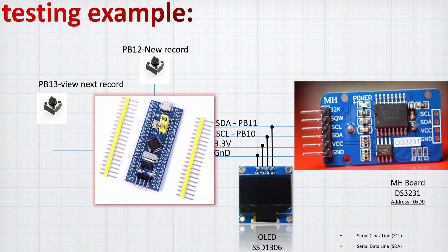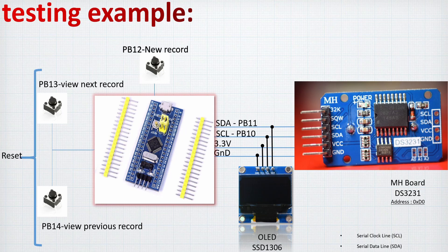I'm adding two other buttons. PB13 is to view the next record, as we will have a small navigation on the OLED display screen. PB14 will show the previous record. Finally, if we push both buttons together, it will perform a reset and all the data in memory will be erased.